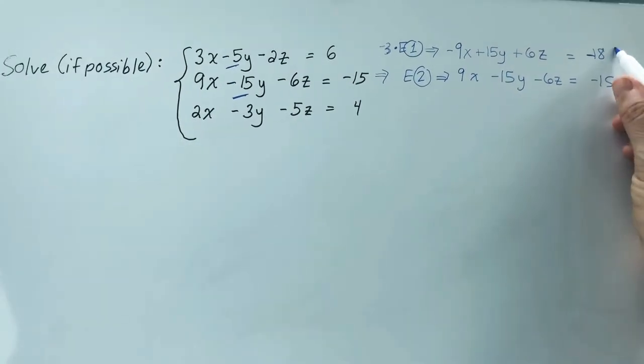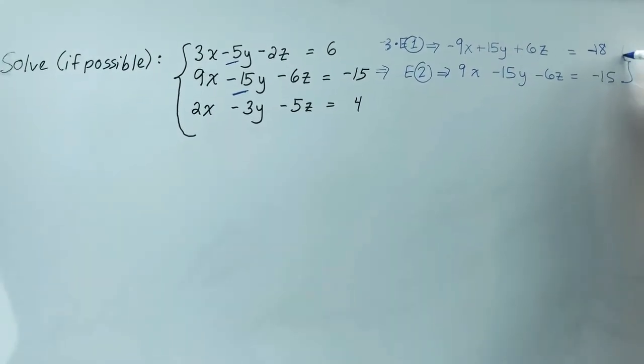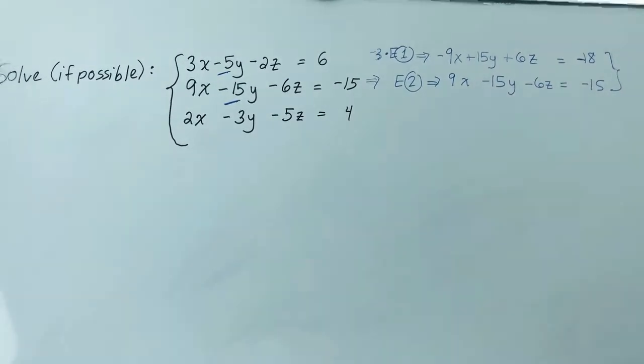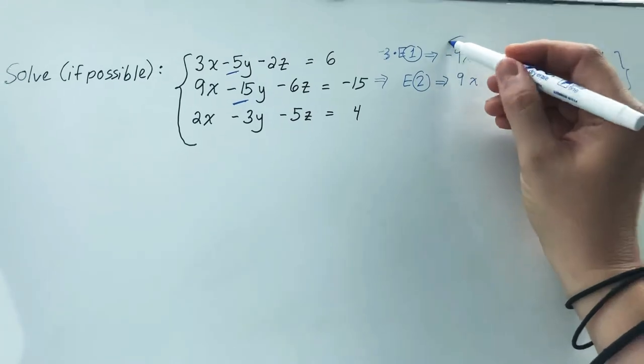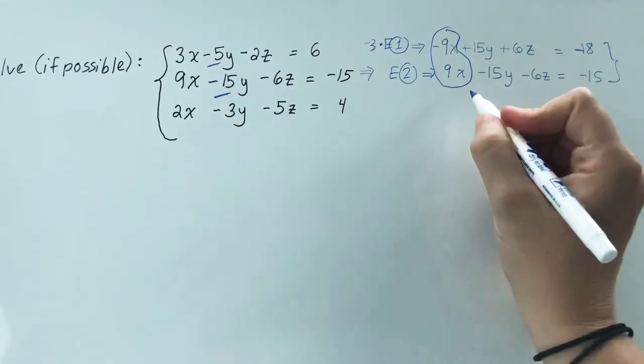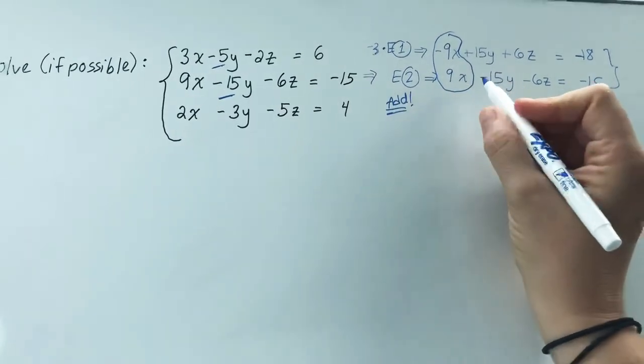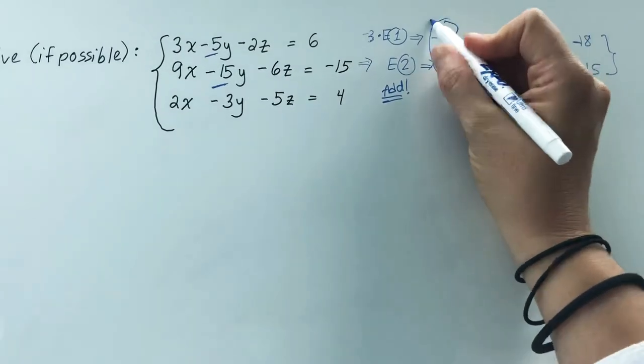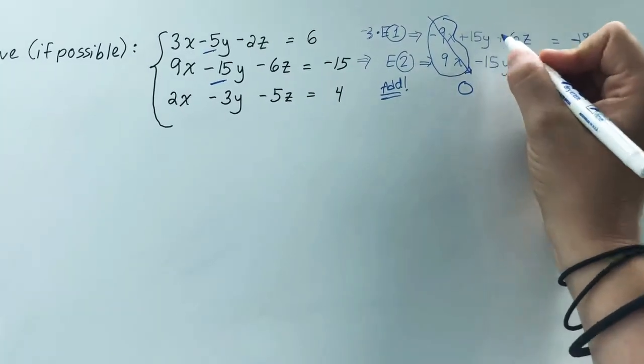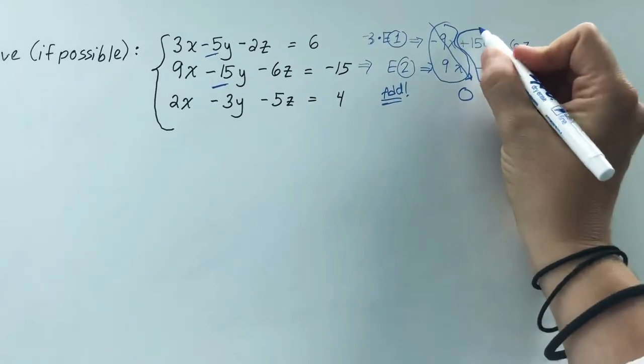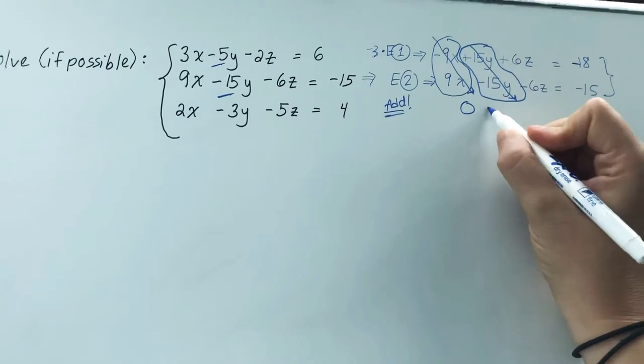So if I take those two equations together and I add them, the goal would be to eliminate y. So if I'm trying to eliminate y, let's see what happens here. Collateral damage we weren't expecting when I add these together is that the negative 9x and the positive 9x also cancel out. So that's 0. We had intended for just the 15y and the negative 15y to cancel, which they do. So that's also 0.